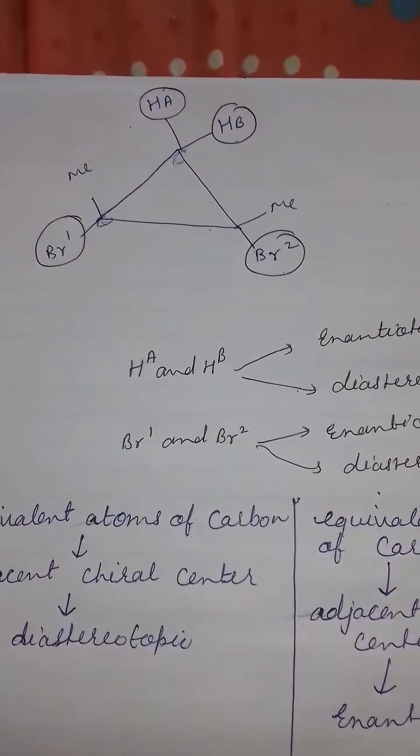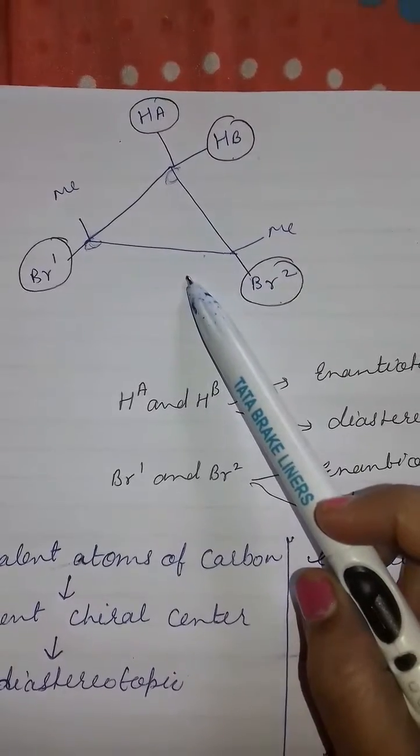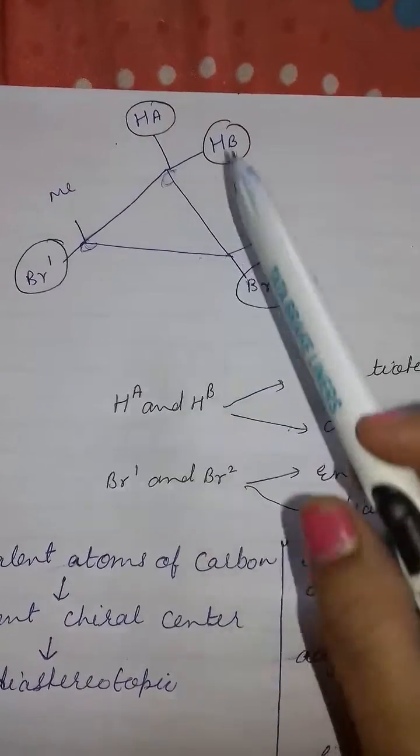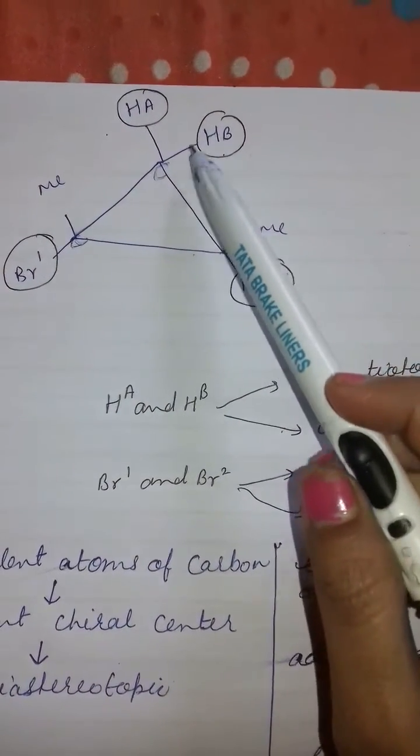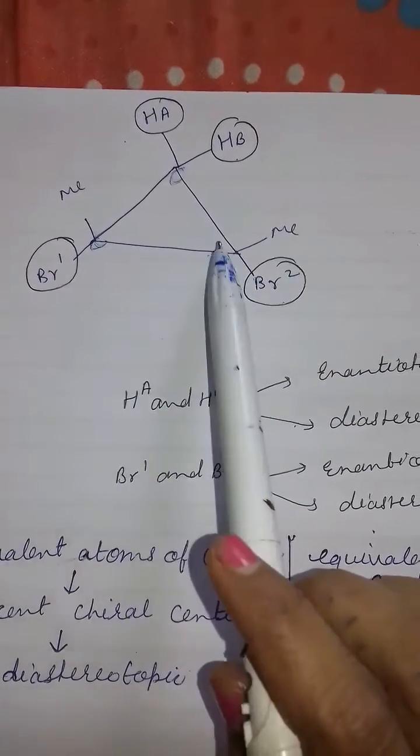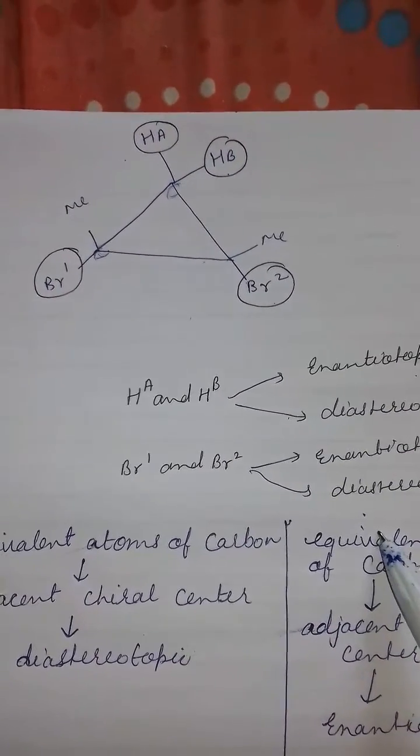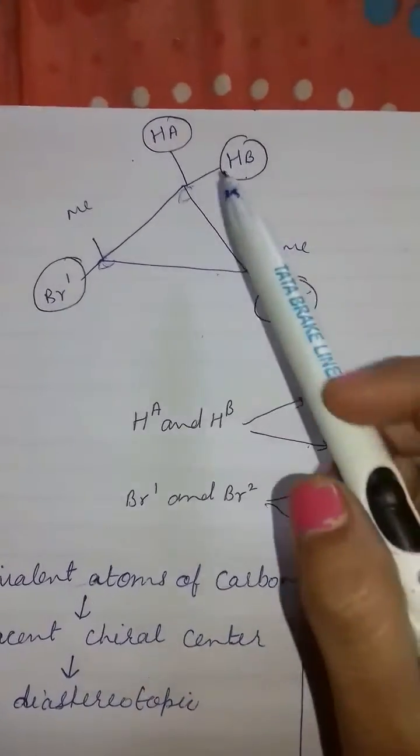In this video we are going to solve a problem. A compound is given here and we have to find either HA and HB are enantiotopic or diastereotopic, and these Br1 and Br2 are either enantiotopic or diastereotopic. To solve this problem we should see if equivalent atoms of carbon has adjacent chiral centers.